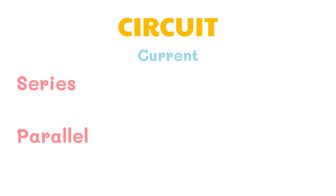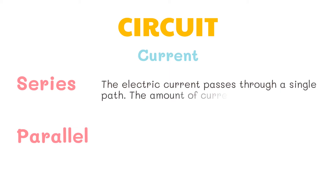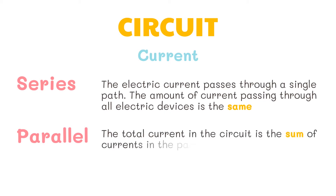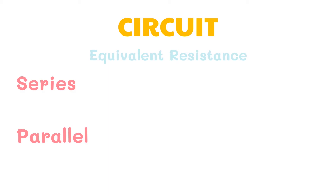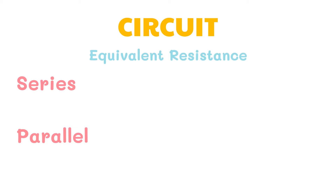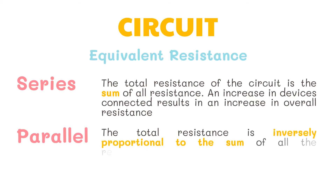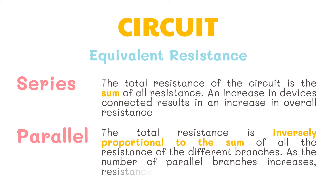In terms of current, in a series circuit the electric current passes through a single path, so the amount of current through all devices is the same. In a parallel circuit, the total current is the sum of currents in the parallel branches. In terms of equivalent resistance, in a series circuit the total resistance is the sum of all resistances — adding more devices increases overall resistance. In a parallel circuit, total resistance is inversely proportional to the sum of resistances of the branches, so as branches increase, resistance decreases.